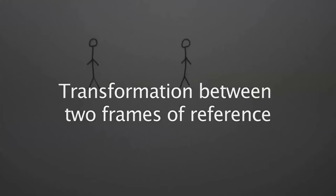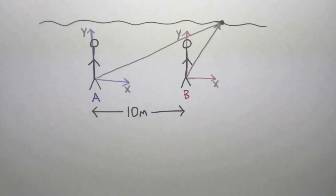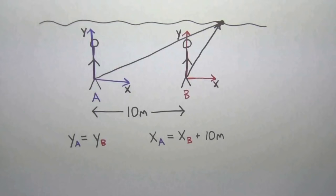Suppose we have two people, person A and person B, and they're standing 10 meters apart. Further suppose that they see an object flying above their heads. Person A and person B will both describe the object as having the same y-component at any given time. However, person A will see the object's x-component shifted over by 10 meters with respect to person B's x-component. Any event that these people want to describe can be converted from one reference frame to the other with these equations. An event indicates something that happens at a given location in space and time.